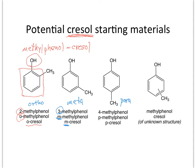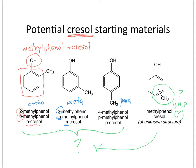Our challenge is that we're going to start with one of these cresols, but you don't know what it is. The methyl group is attached on the ring somewhere — it could be ortho, meta, or para. So what we're going to do is take our cresol of unknown structure, create our ether product, and the melting points of the ether products are very different. By the melting point of the ether product, we can come back and identify which cresol we started with.